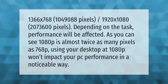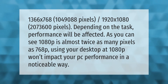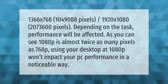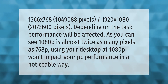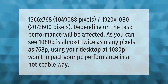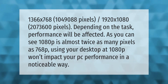1366 by 768 equals 1,049,088 pixels. 1920 by 1080 equals 2,073,600 pixels. Depending on the task, performance will be affected. As you can see, 1080p is almost twice as many pixels as 768p. Using your desktop at 1080p won't impact your PC performance in a noticeable way.